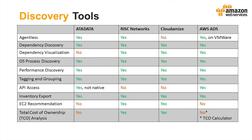This table shows several popular discovery tools in comparison with some of the features we just described. Some tools may offer more features than others yet may cost more. It's a trade-off between feature set and tool cost, among other factors.